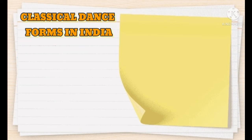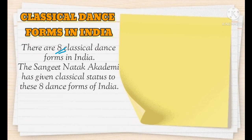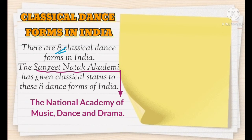Hello everyone, today in this video we are going to learn the classical dance forms of India, which is very important for most competitive exams. There are eight classical dance forms in India. The Sangeet Natak Academy, also known as the National Academy of Music, Dance and Drama, was established in the year 1953, and has given classical status to these eight dance forms.